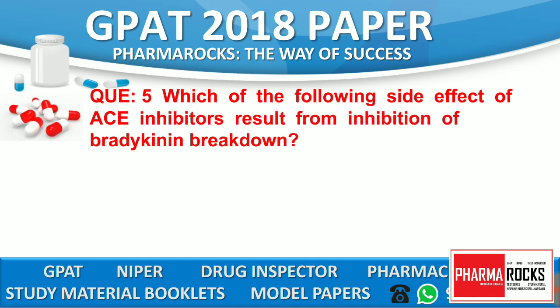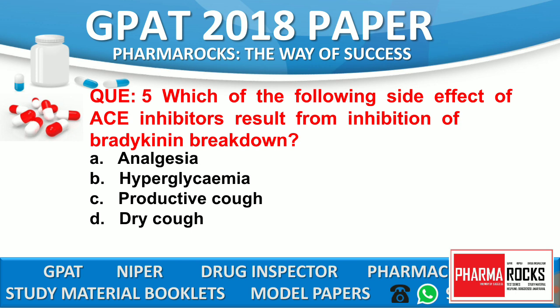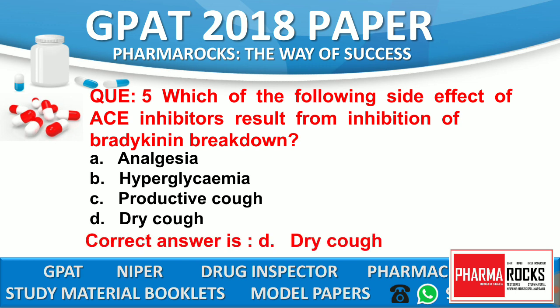Question number 5: Which of the following side effect of ACE inhibitors results from the inhibition of bradykinin breakdown? Option A: Analgesia. Option B: Hyperglycemia. Option C: Productive cough. Option D: Dry cough. The correct answer is D — dry cough. Dry cough is the main and famous side effect of ACE inhibitors. ACE inhibitor drugs include Captopril, Lisinopril, and Enalapril.